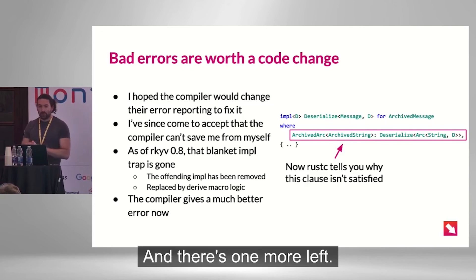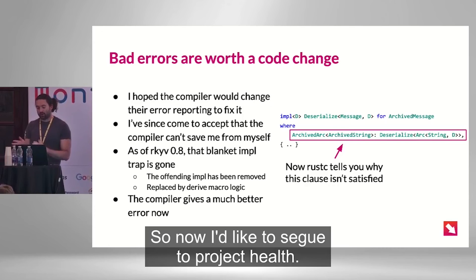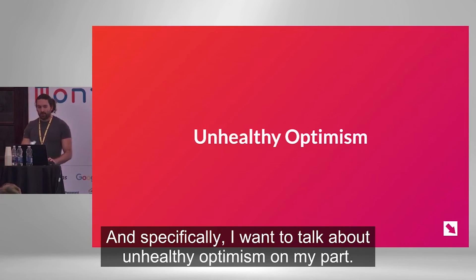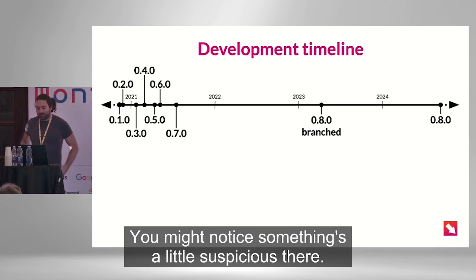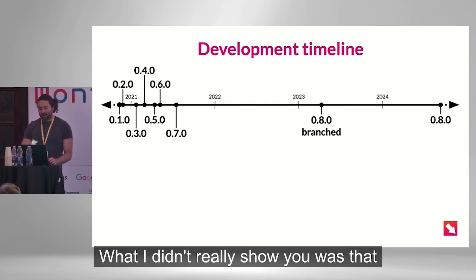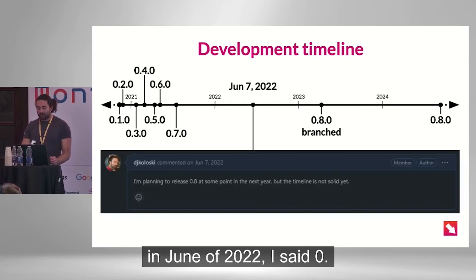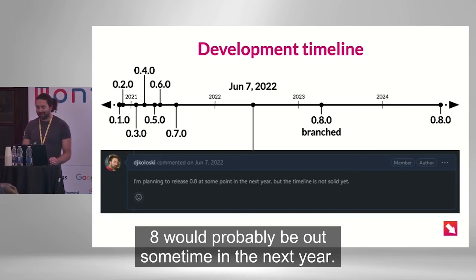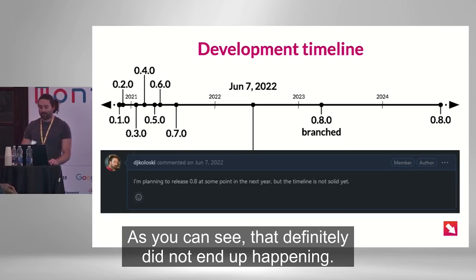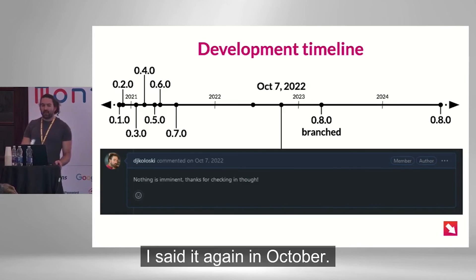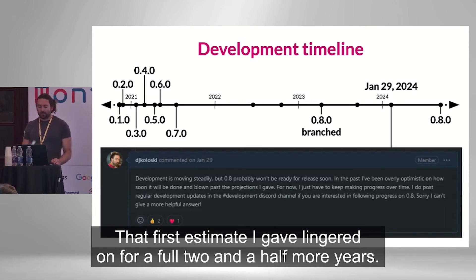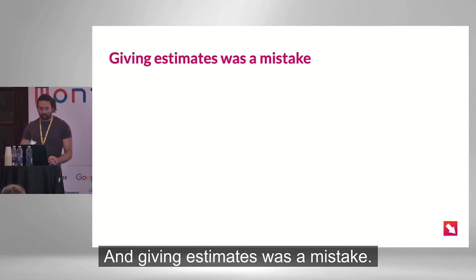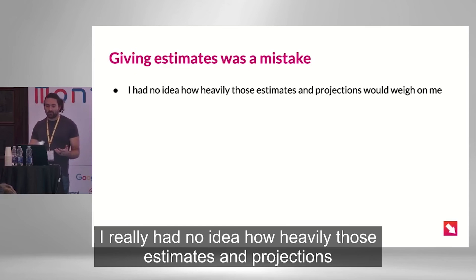And that's the end of my second story. Now I'd like to segue to project health — and specifically, I want to talk about unhealthy optimism on my part. In June of 2022, I said 0.8 would be out sometime in the next year. As you can see, that definitely did not end up happening. And it really wasn't just once — I said it again in October, again in January of this year. That first estimate I gave lingered on for a full two and a half more years. Giving estimates was a mistake. I really had no idea how heavily those estimates and projections would end up weighing on me.